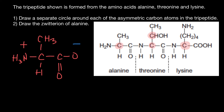We call such an amino acid a zwitterion because it has both a positive and a negative charge. Both charges cancel each other out, and this amino acid is overall neutral. This is what we call a zwitterion amino acid — when the amino group has a positive charge and the carboxylic group has a negative charge.